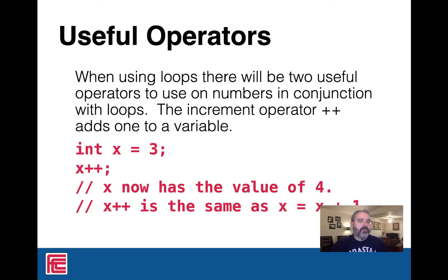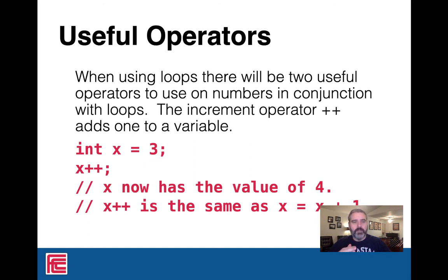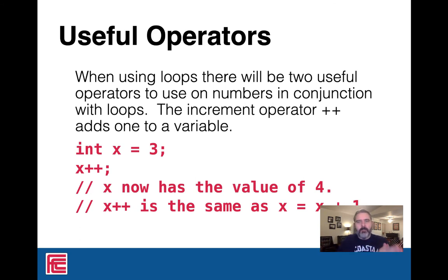Here's the idea. If you have a variable x and give it a value of three, then at some point you call x++, the value of x will now be four. We just added one to x. x++ actually does two things: it's going to add one to the number, and it's going to assign it back to the original variable x. So it's the exact same thing as saying x equals x plus one, where you calculate the value of the expression on the right and then reassign it back to x.